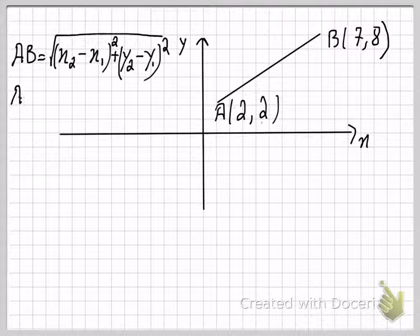I'll simply use the formula, which is AB equals the square root of (7 minus 2) squared plus (8 minus 2) squared.